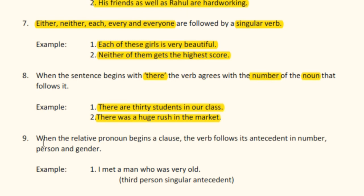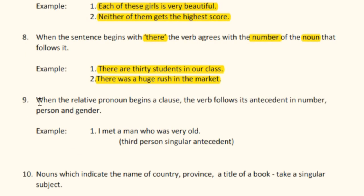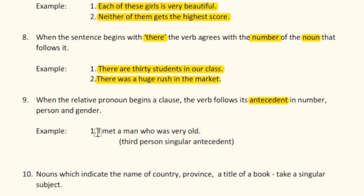Rule number nine: when a relative pronoun begins a clause, the verb follows its antecedent in number, person, and gender. Antecedent means the preceding word — in Hindi, 'purvavarti'. For example, 'I met a man who was very old.' Here 'man' is the third person singular antecedent, so the singular verb 'was' is used.